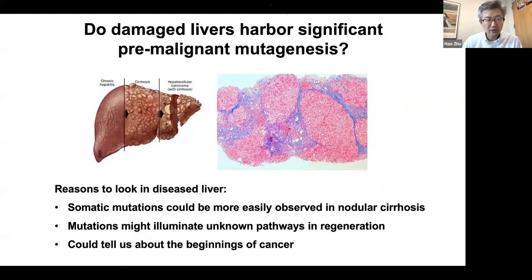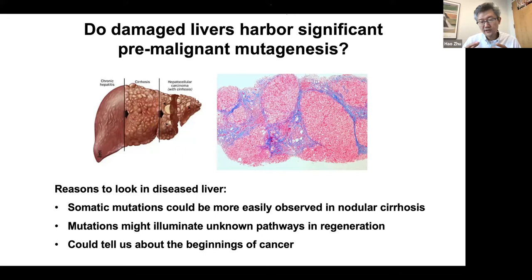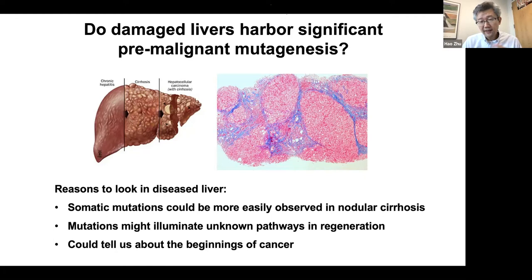A number of years ago, we had the same question about the cirrhotic or chronically damaged liver. A key reason to look within the liver is that with cirrhosis and chronic damage, somatic mutations might be more easily detectable because they contribute to clonal growths in the form of regenerative or cirrhotic nodules. If we can identify recurrent mutations, they might illuminate known or unknown pathways in tissue regeneration — and the key question is whether all mutations relate to cancer or not.